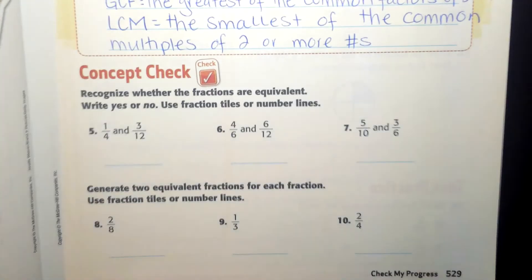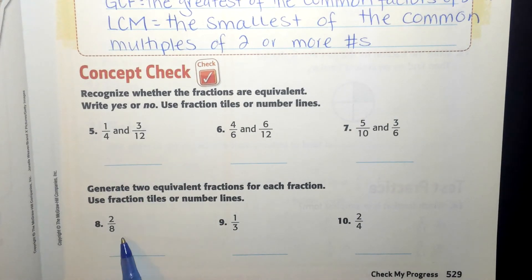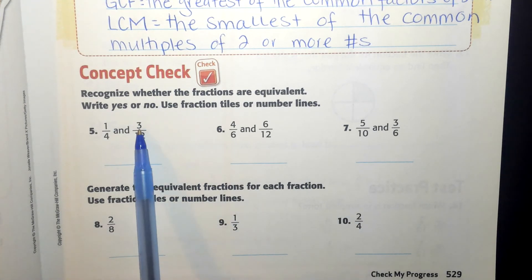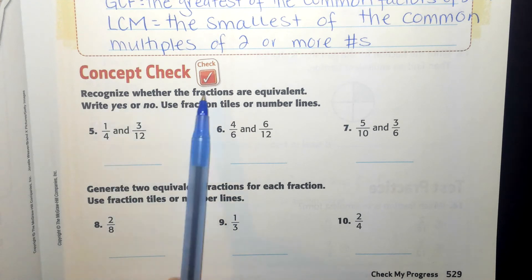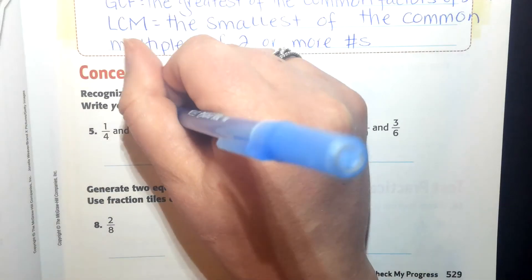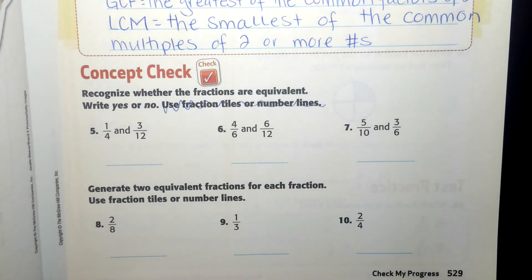Now moving into my concept check, I'm going to do one of these questions with you, and then you're going to do the other ones on your own. But please make sure that you copy down the same ones that I do as well. So this says recognize whether the fractions are equivalent, write yes or no. And then use fraction tiles or number lines. It's too hard for you to do from home. You don't have those available to you. So you don't need to worry about that part.